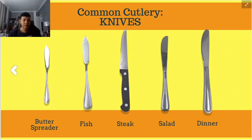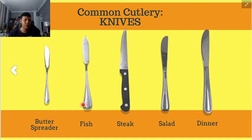Cutlery commonly has three types: spoons, forks, and knives. For knives, the butter spreader is used to spread butter on bread. The fish knife, though similar to the butter spreader, is larger and used for fish dishes. There is also the steak knife for cutting meat, the salad knife for salad, and the dinner knife used during the main meal.